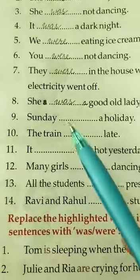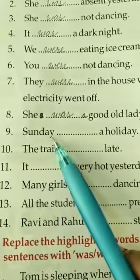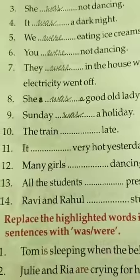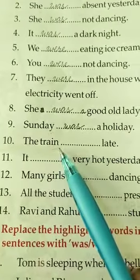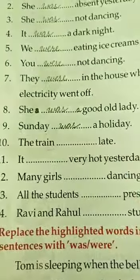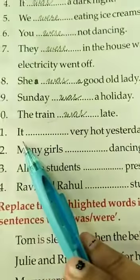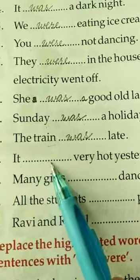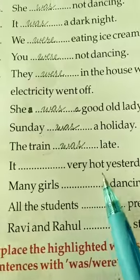Ninth question: 'Sunday ___ a holiday.' Sunday is a singular noun, so we use 'was'. Answer: Sunday was a holiday. Tenth part: 'The train ___ late.' Train is singular, so: The train was late. Eleventh part: 'It ___ very hot yesterday.' 'It' is a singular pronoun, so we use 'was'. Answer: It was very hot yesterday — meaning yesterday was a very hot day.